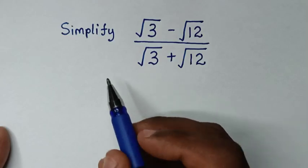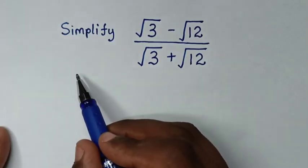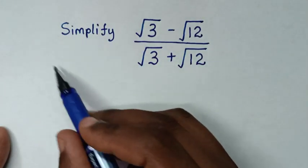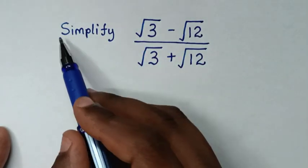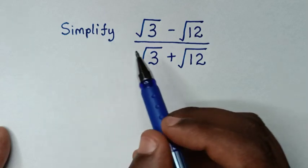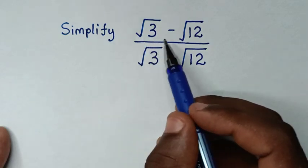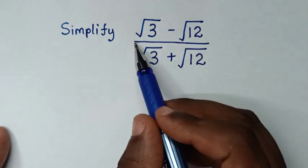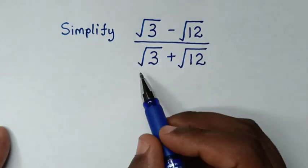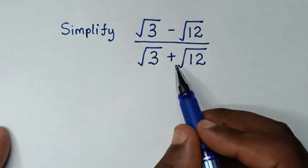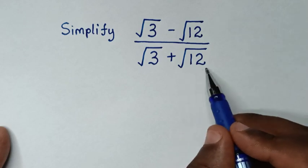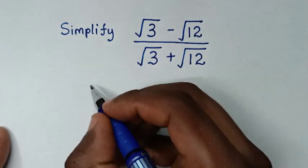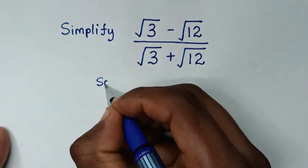Hello, you are welcome to solve this math problem by simplifying square root of 3 minus square root of 12 over square root of 3 plus square root of 12. Now, solution.